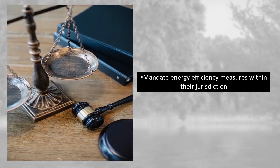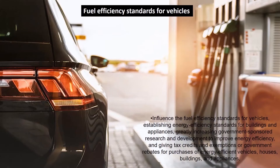The government could mandate energy efficiency measures within their jurisdiction, though it may be difficult. This should influence fuel efficiency standards for vehicles, establish energy-efficient standards for buildings and appliances, gradually increase government-sponsored resources and employment to improve energy efficiency, and give tax credits, exemptions, and government rebates for purchases of energy-efficient vehicles, housing, buildings, and appliances. Such initiatives have been seen in India, as discussed when we covered sustainable development goals.